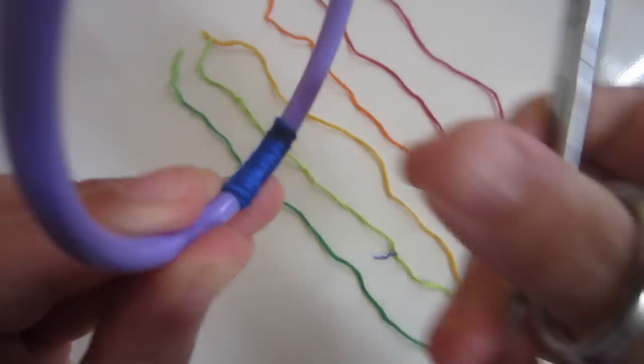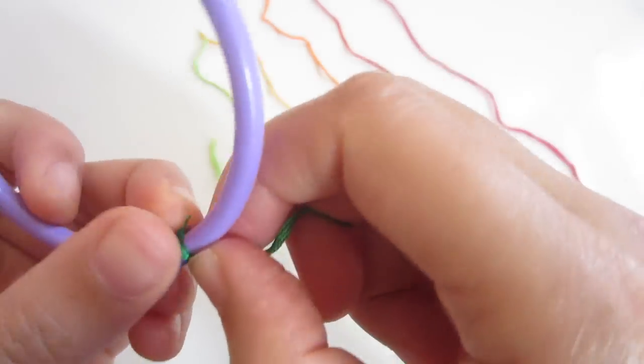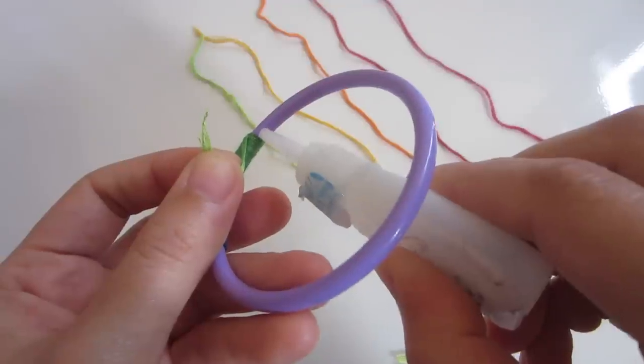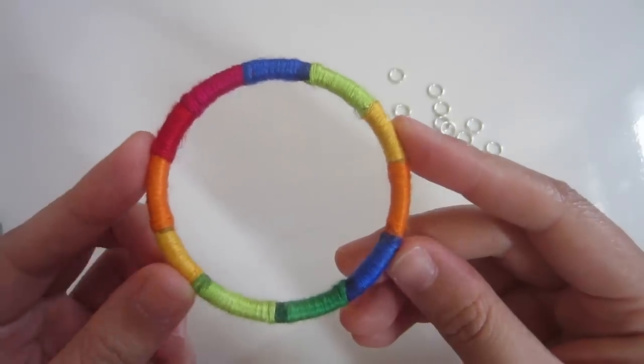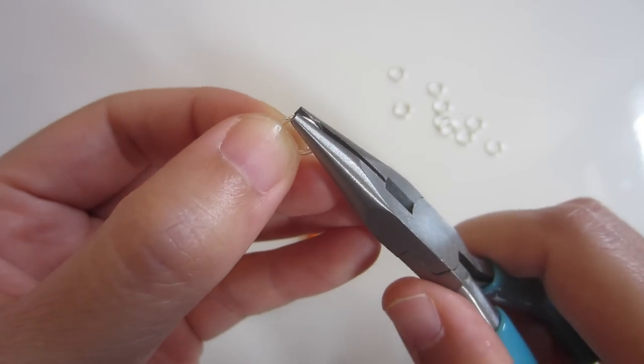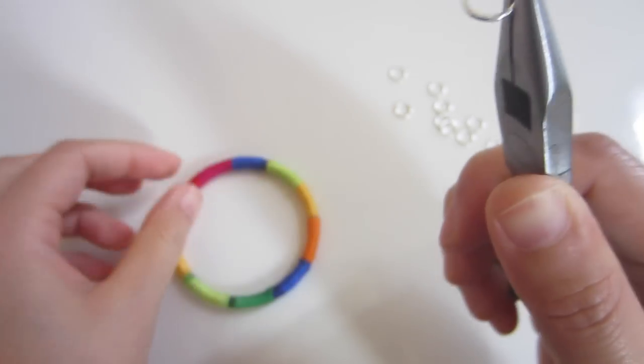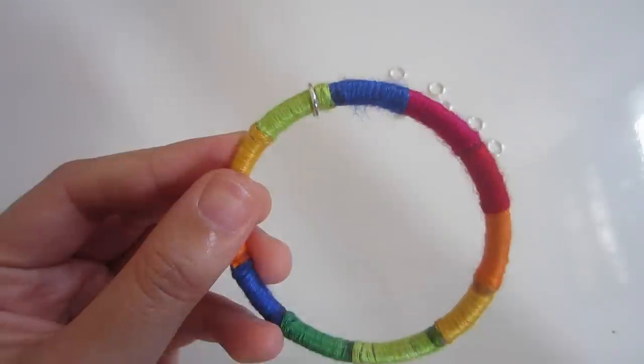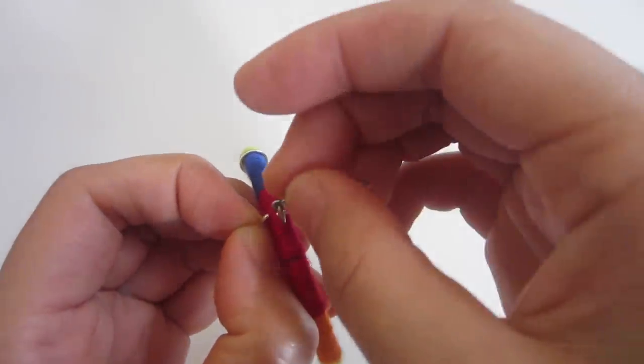Continue wrapping with the other colors until you get this. Take some jump rings, open them up, and add them onto the bracelet. You can also add in any charms that you like and voila!